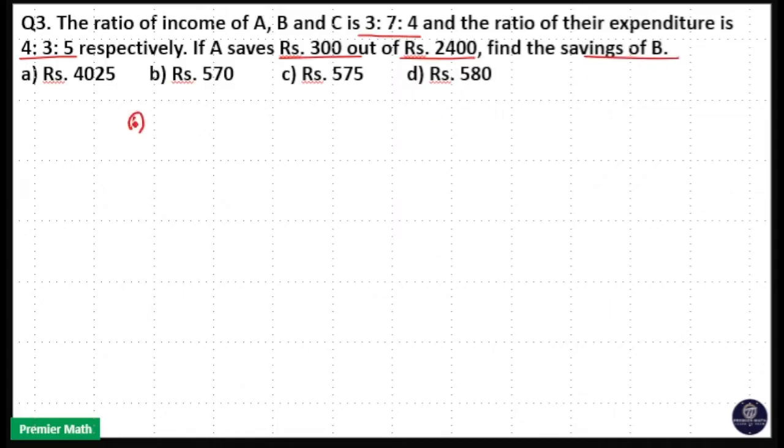So we have three people A, B and C here and their income is in the ratio 3 is to 7 is to 4. That means I will take it as 3x, 7x and 4x.